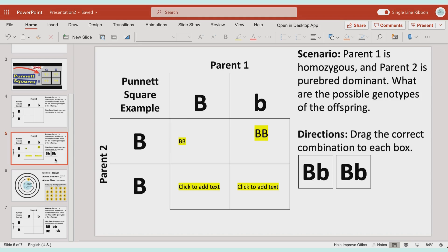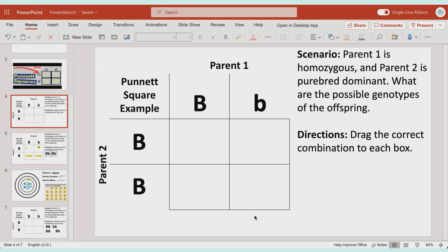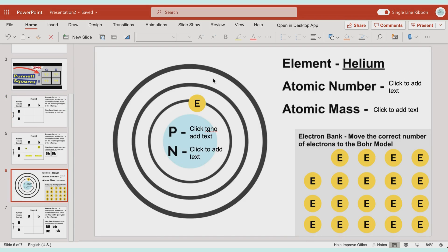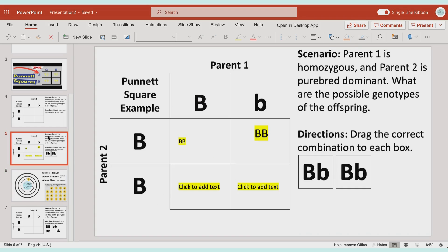Obviously I did this with a Punnett square. I just made this out of a table. When I made my Bohr model one, I just copied in some circles. You can literally drag any sort of thing.